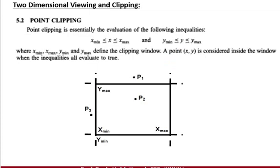In the clipping section, we have point clipping. Point clipping follows this formula. Here we have points P1, P2, and P3. For P2, if the value of x is inside the minimum to maximum range of x, and if the y value is in the minimum to maximum range of y, then P2 is inside this region.